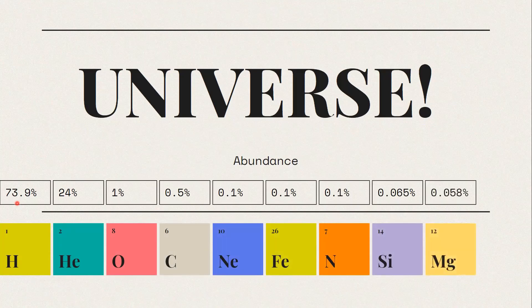Magnesium is 0.058% and sulfur is 0.044%. The two most abundant elements in the universe are hydrogen and helium.